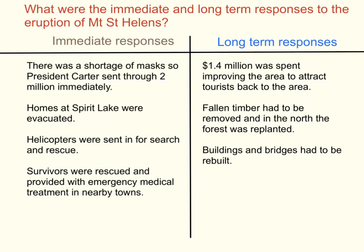The immediate responses to the Mount St Helens eruption were: masks were sent by President Carter immediately, with 200 million sent in total; homes at Spirit Lake were evacuated; helicopters were sent in for search and rescue; and survivors were provided with emergency medical treatment in nearby towns. Long-term responses included 1.4 million US dollars spent on improving the area to attract tourists back, fallen timber removed and forests replanted, and buildings and bridges rebuilt to restore infrastructure.